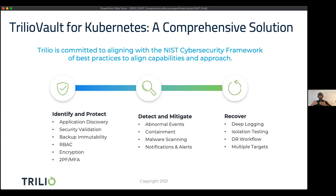Finally, we have multiple target options. One train of thought is to minimize your attack surface; the other is to maximize your recoverability surface. You can have targets in AWS S3 and also in Azure Blob — the chances of all these different targets being compromised simultaneously is low. The more targets you have, the more you can extend your recoverability surface, so even if one target is compromised you have different copies to recover from. You don't want to pay the ransom — you want insurance through Trilio.